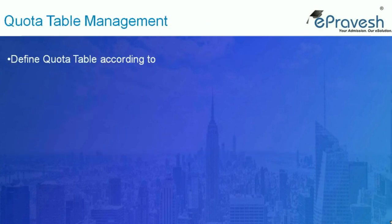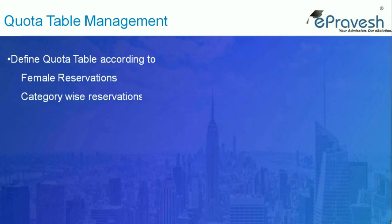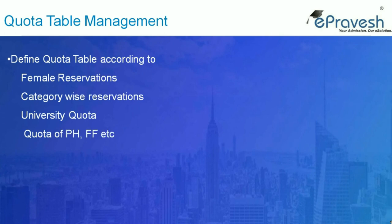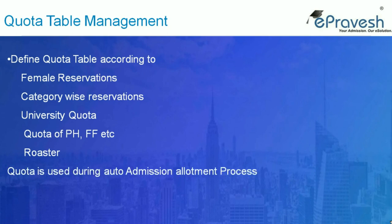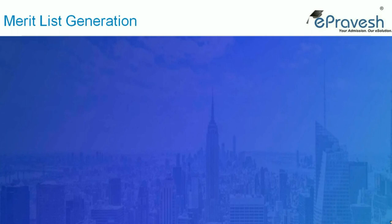Next is quota table management. The admission committee can define the quota table according to rules related to female reservation, category-wise reservation, university quota, quota for freedom fighters, physically handicapped, etc. This quota is used for auto allocation of admissions during the allotment process.